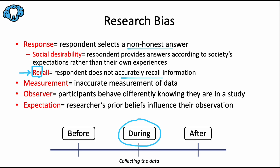Observer bias is when participants know they are being monitored and so they act differently than they would under normal circumstances, leading to biased or skewed results. This is also known as the Hawthorne effect. And then lastly, we have expectation bias — which is also sometimes confusingly called observer expectancy bias — not to be confused with plain observer bias.